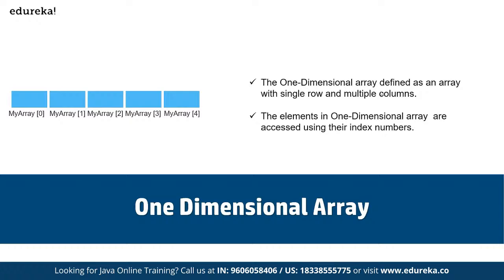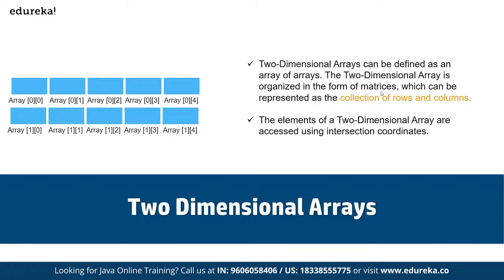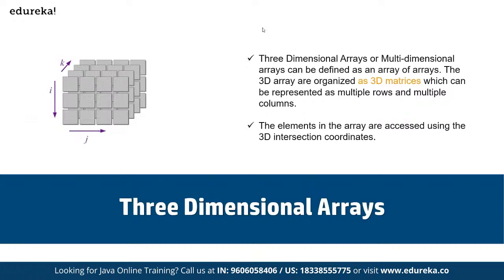A two-dimensional array can be defined as an array of arrays, organized as matrices represented as rows and columns, with elements accessed using intersection coordinates. We also have three-dimensional arrays, which are multi-dimensional arrays organized as 3D matrices with multiple rows and columns, and elements accessed using 3D intersection coordinates.